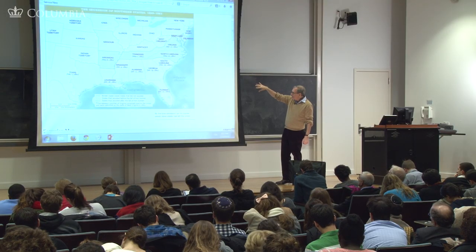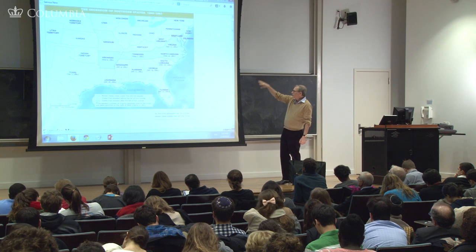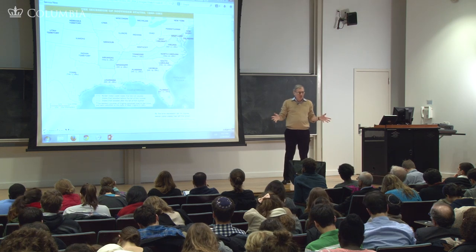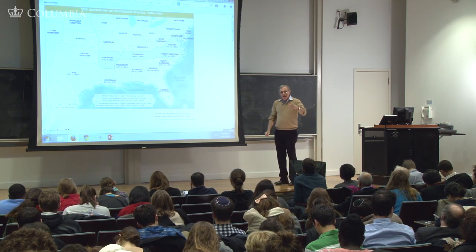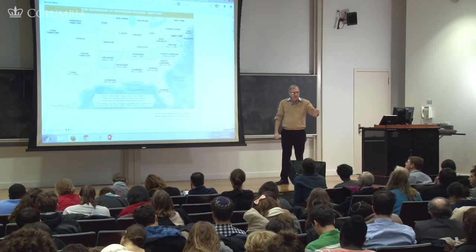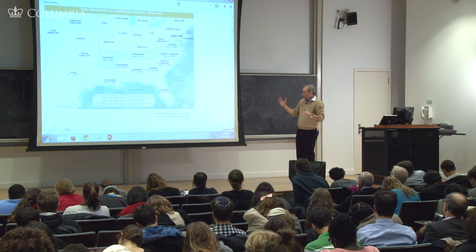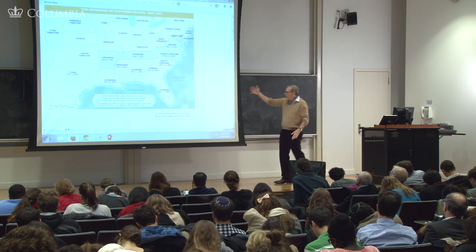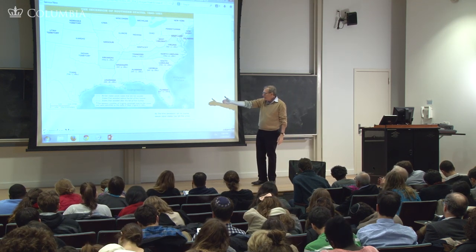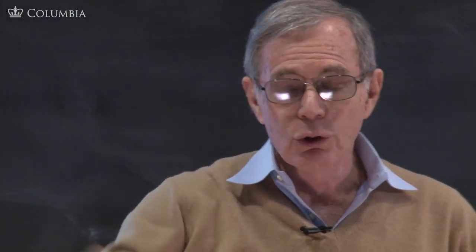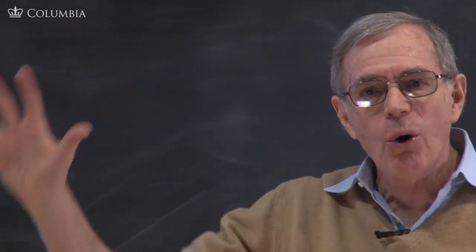What is it that differentiates those Deep South states from the other states? Not slavery, but cotton. Cotton is the cause of the Civil War — at least cotton is what differentiates the secession movement at the beginning. It's the cotton states. That is the dynamism of the South, the expansionary part. These are places near or on the Caribbean, the Gulf of Mexico — places that look South, not North or West, for their future. New Orleans is a tremendous entrepot for that whole region.